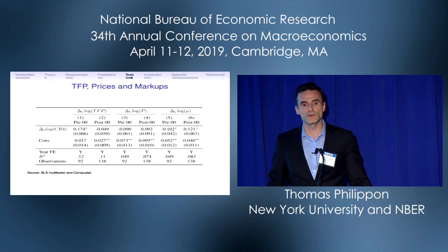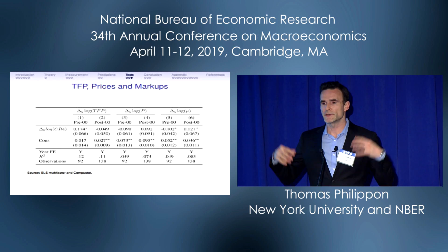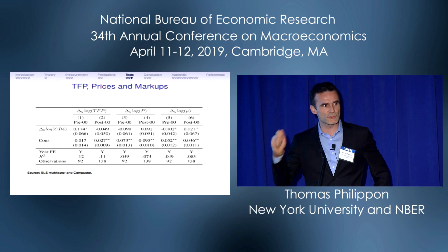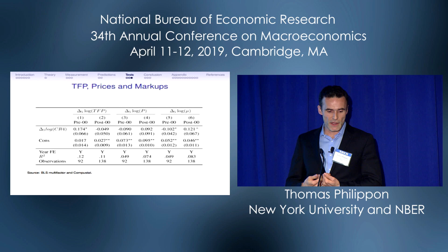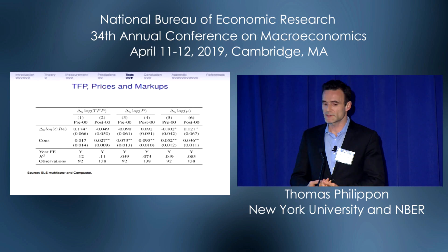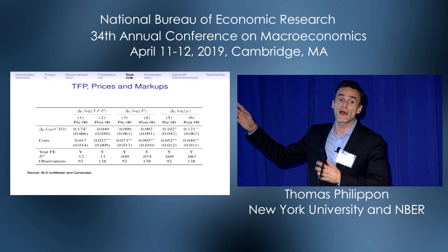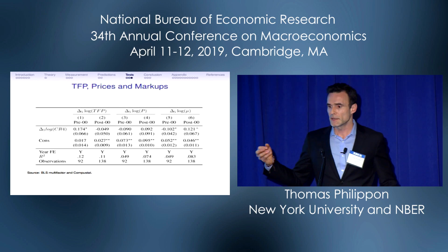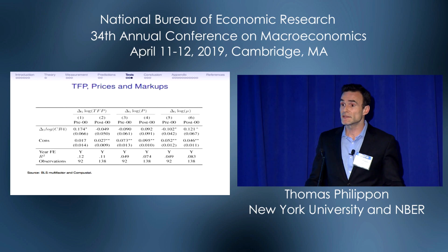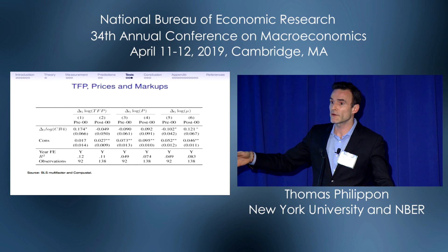Final test: the covariance between concentration and either TFP growth, prices, or markups. If you shock the model with a higher sigma, you generate positive covariance between productivity and concentration, negative covariance between prices and concentration, and negative covariance between concentration and markups. This is exactly what we see on average pre-2000: if you picked a random industry getting more concentrated, you could guess it also had higher TFP growth, lower price inflation, and lower markup growth. If you do it since 2000, it's exactly the opposite.